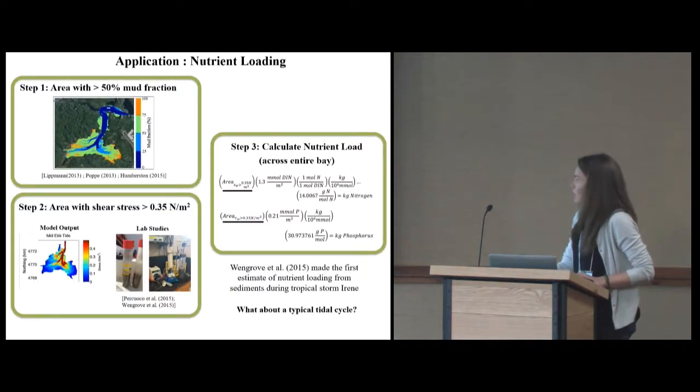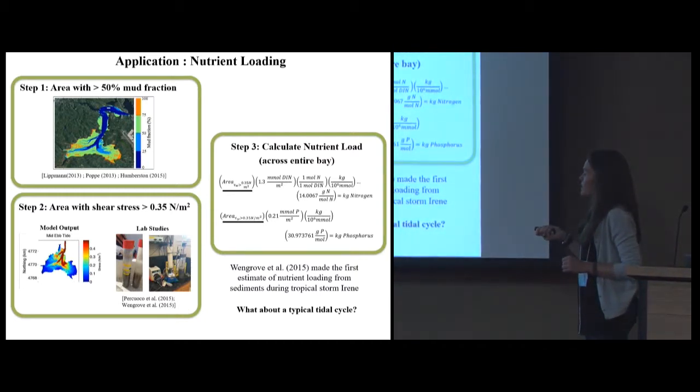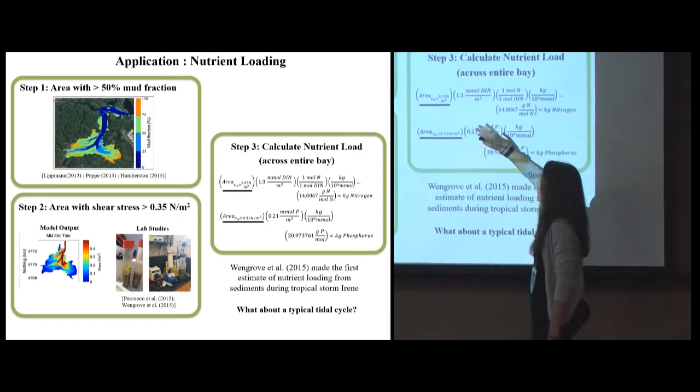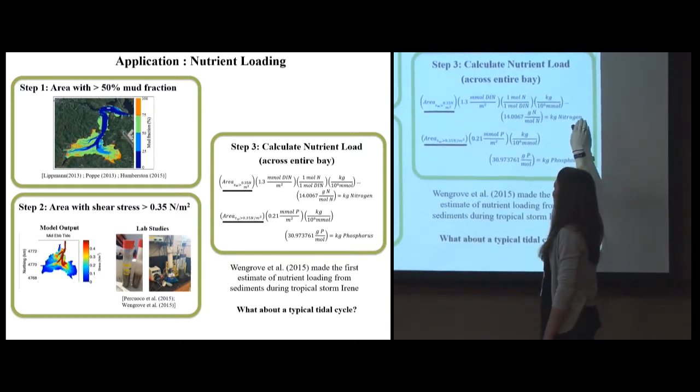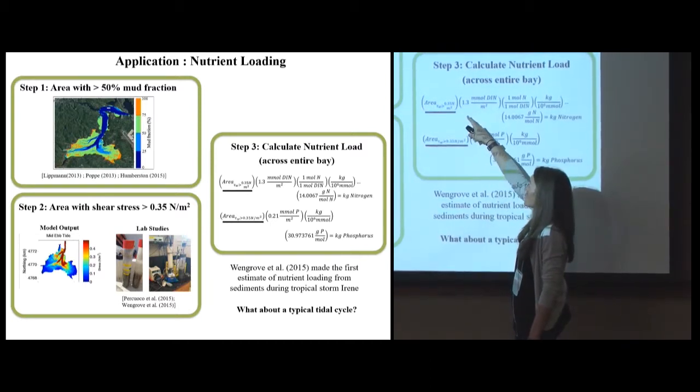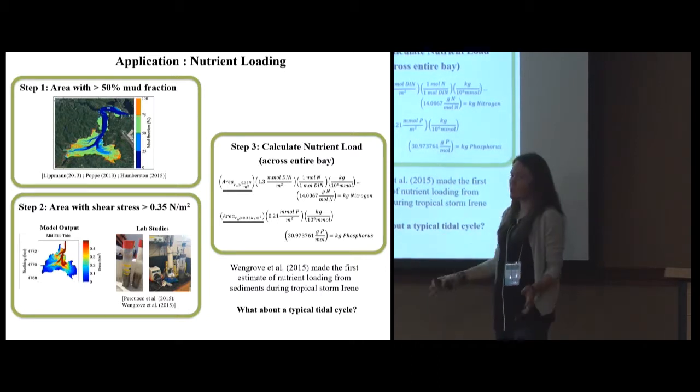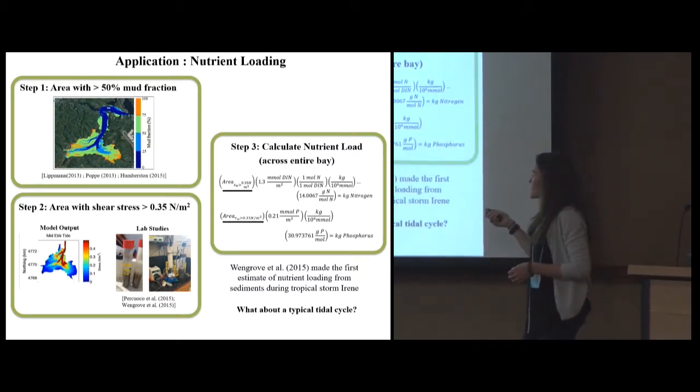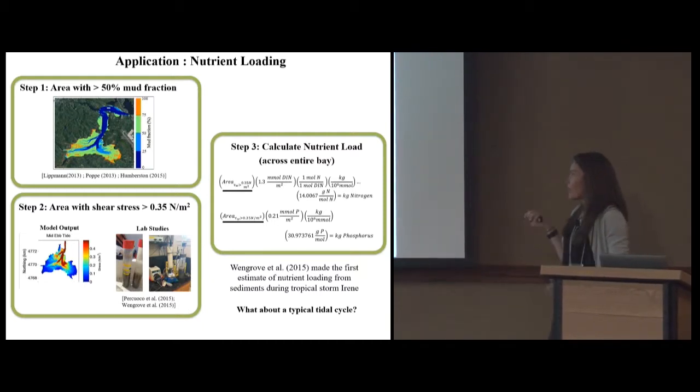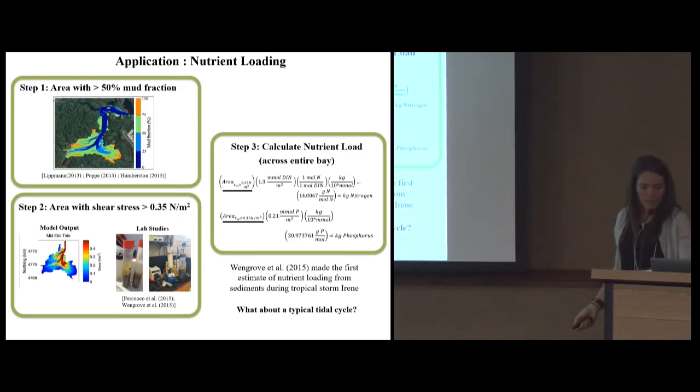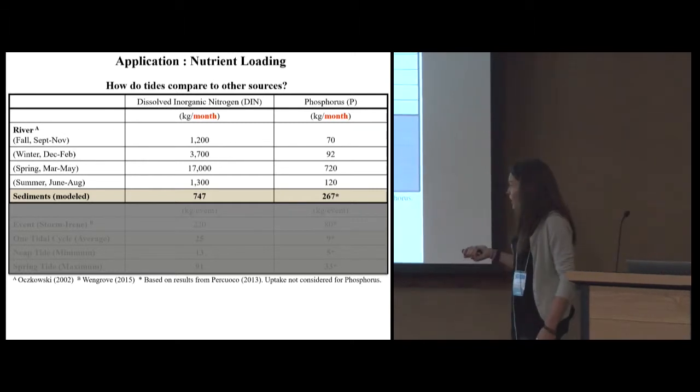So step one, where is the mud? Step two, areas that are greater than 0.35 newtons per meter squared. This really incorporated a bunch of lab studies that were done in 2000 and based on a paper in 2015. If you take the area that are greater than 0.35 newtons per meter squared and greater than 50% mud fraction, you find a loading of nitrogen and phosphorus based on these estimates. This study found 1.3 millimoles of nitrogen per meter squared could be fluxed out of the sediments in the Great Bay and 0.21 millimoles of phosphorus. This is how we get our nutrient loads. When Grove made the first estimate during an extreme event, she had shear stress estimates during a storm. We're looking at ambient conditions, right? What about a typical tidal cycle?